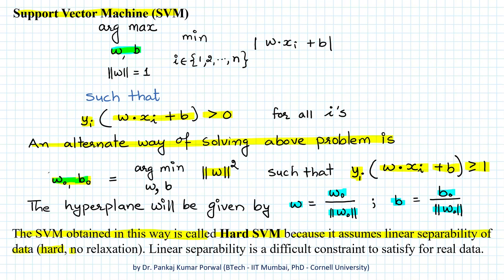Linear separability is a difficult constraint for data to satisfy. To overcome this, we have a softer version called soft SVM, and in the next lecture we will learn about that.